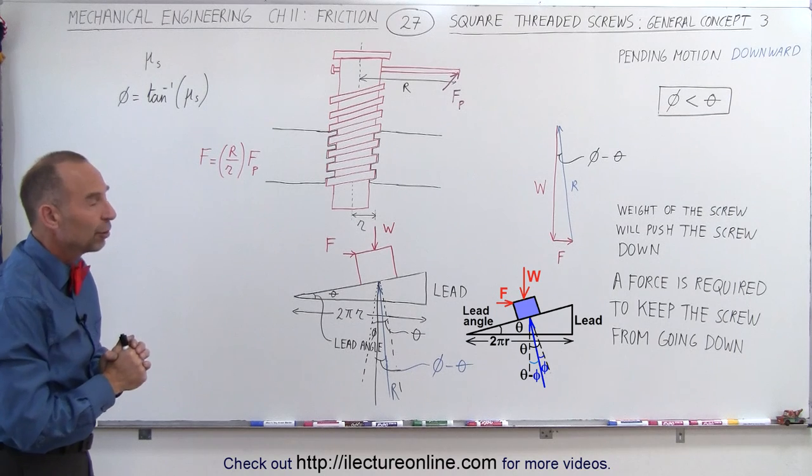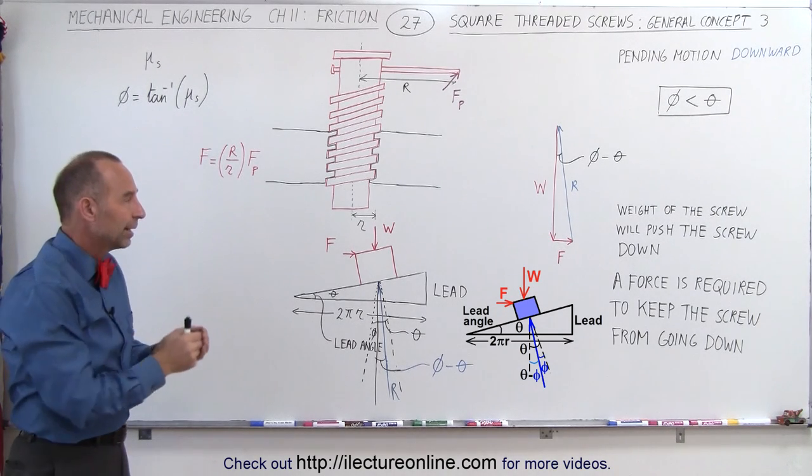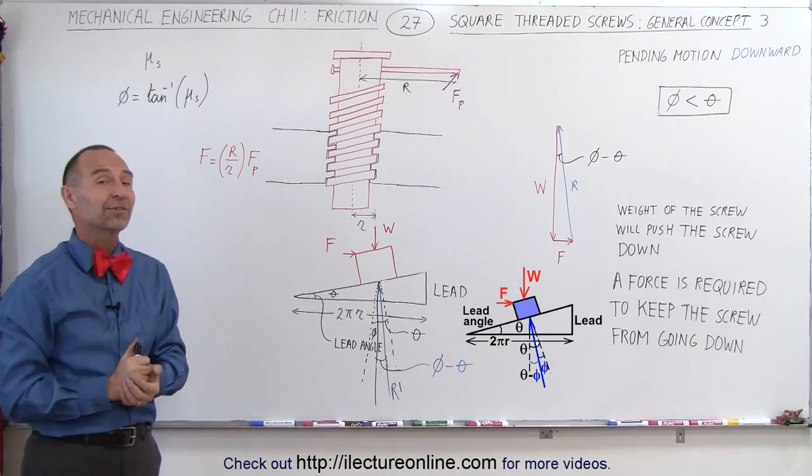But this is the situation that we have when the friction is so small that phi is larger than theta. And that's how it's done.